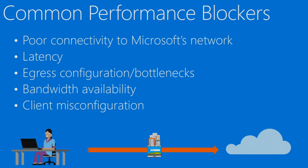I'll talk about the various methods available to connect out of your enterprise into the network, and there will be some troubleshooting elements at the end. I sat down and thought about what are the most common performance blockers — poor connectivity to Microsoft's network, latency, egress configuration or bottlenecks, bandwidth availability, and client configuration. I'll cover the most important troubleshooting steps, but what I really want to get across to you is connectivity — how to best get your traffic to us.